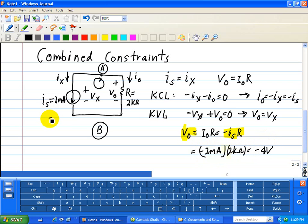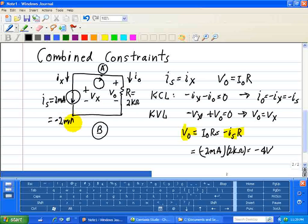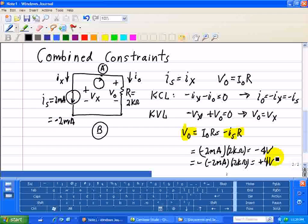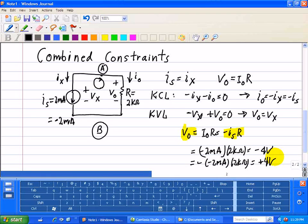Now suppose I change IS to minus 2 milliamps, just changing the polarity or direction associated with IS. In this case, it would be minus minus 2 milliamps times 2 kiloohms, which equals plus 4 volts. And so that's our solution to that circuit problem.